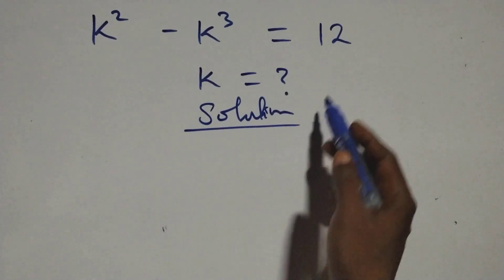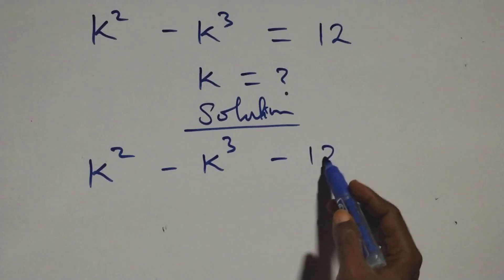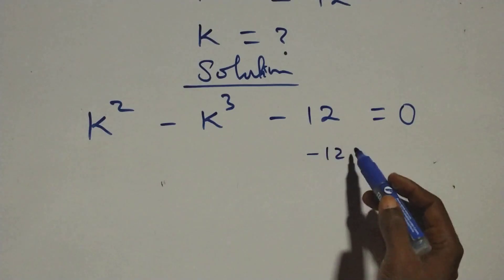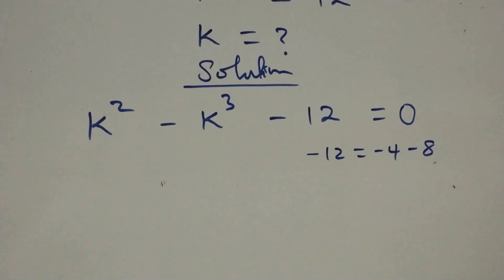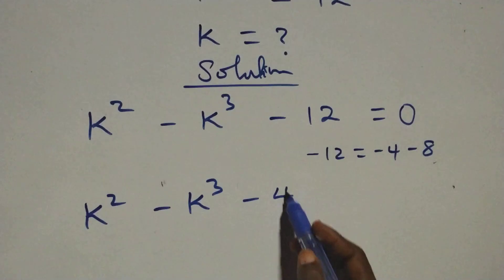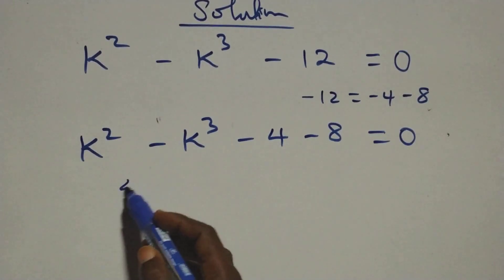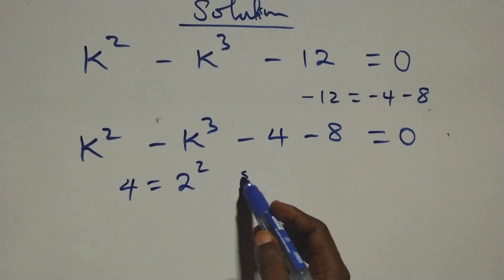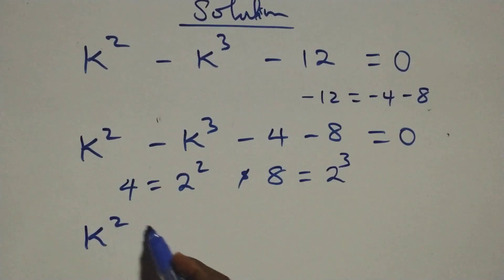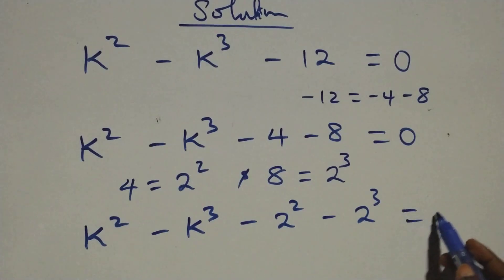Solution: from here, you can take 12 to the left-hand side. We have k squared minus k cubed, then minus 12 equals zero. We can write minus 12 as minus 4 minus 8. So the equation becomes k squared minus k cubed minus 4 minus 8 equals zero. Here, 4 can be written as 2 times 2, that's 2 squared, and 8 can be written as 2 times 2 times 2, that's 2 cubed. So we have k squared minus k cubed minus 2 squared minus 2 cubed equals zero.